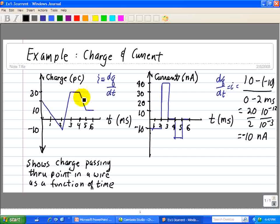And then finally, we have a negative slope going from 4 to 5 milliseconds. And therefore, the evaluation goes from 30 to 10, or 20, and there's a negative slope. So 20 divided by 1 is just, again, minus 20 nanoamps.